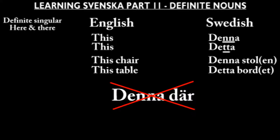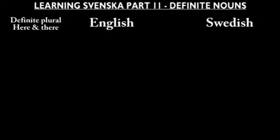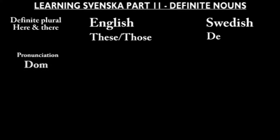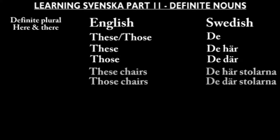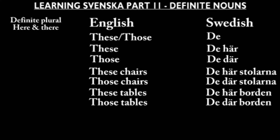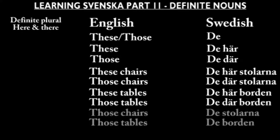So don't say denna där. What about plural? We saw earlier that if you inflect a plural noun to definite form you don't have to care about the gender — we just add -na. For plural we use the word de, often pronounced dom. De här for 'these' and de där for 'those'. De här stolarna. De där stolarna. De här borden. De där borden.